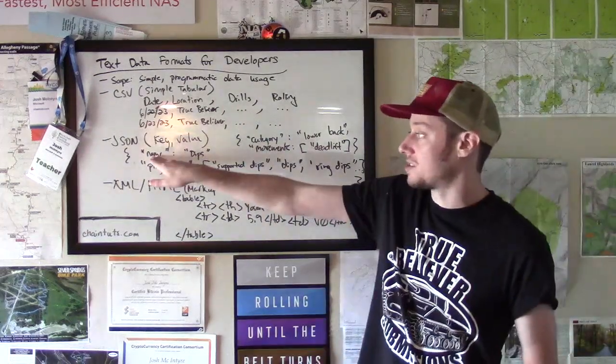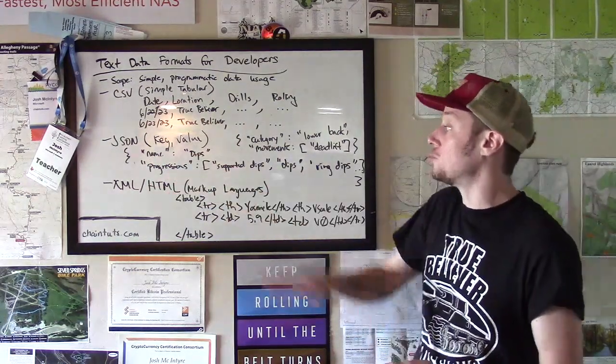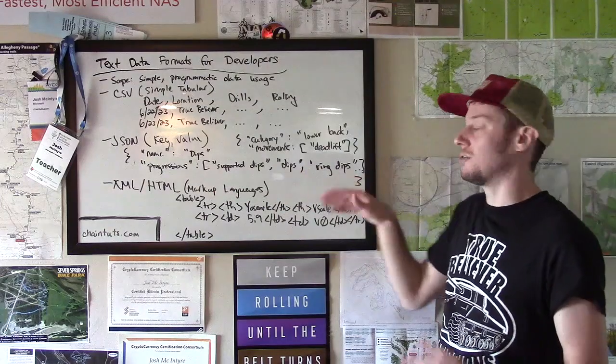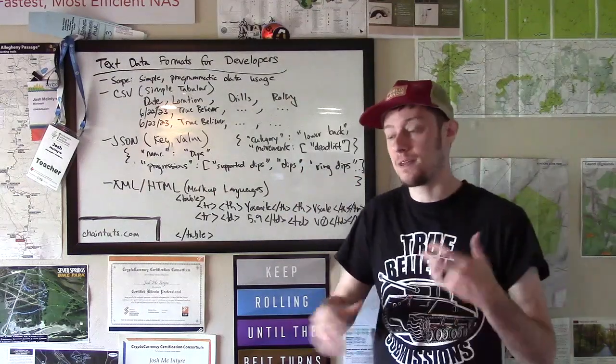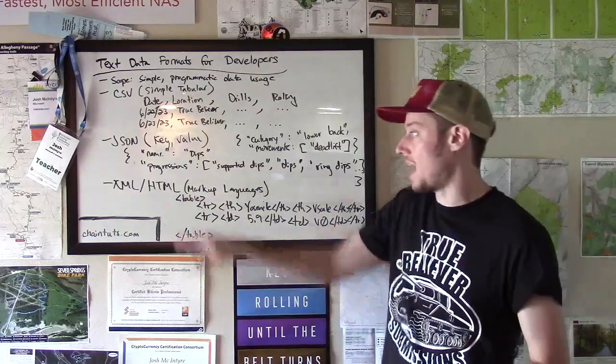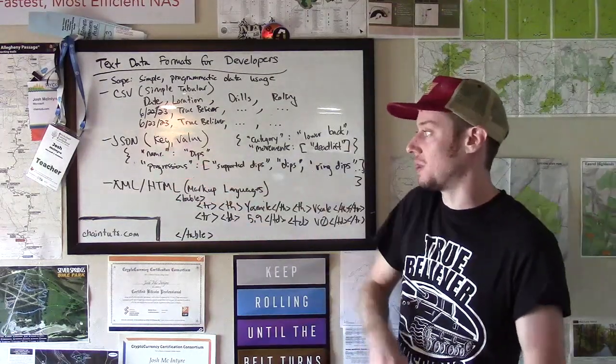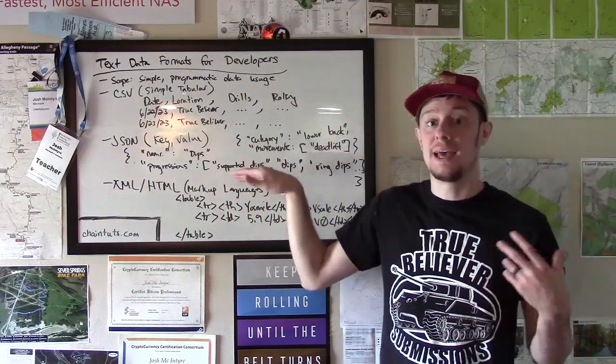So we could have just a simple key value pair. We could have a key whose value is actually a list of lots of different values. Or we could even have subsets where you could have a key and then another dictionary that contains different levels of keys, values, and lists.